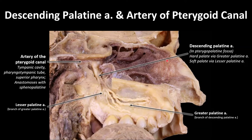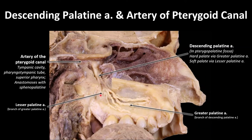The descending palatine artery exists within the pterygopalatine fossa. As it exits the fossa and enters into the greater palatine canal, it changes its name to the greater palatine artery. The greater palatine artery splits into two additional branches: the greater palatine continues on to supply the hard palate, and the lesser palatine artery goes posterior to supply the soft palate. Each exits through the foramen of the same name — the lesser palatine artery through the lesser palatine foramen, and the greater palatine artery through the greater palatine foramen.